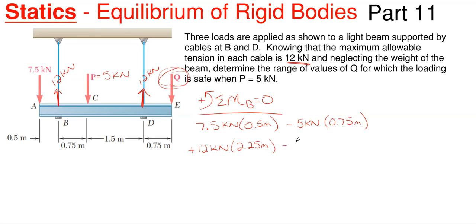And then I'm going to have plus my DY reaction, which is the 12 kilonewtons or the D reaction at that cable, times its perpendicular distance over to point B, which is 2.25 meters. That will be rotating counterclockwise about point B, so it'll be positive. And then lastly, we have Q, which is unknown, and its perpendicular distance over to B is 3 meters, and all of that is equal to 0.